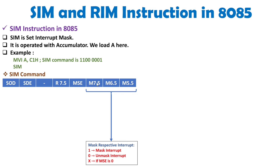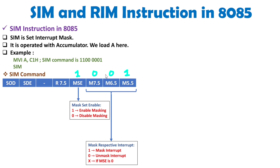The 3 bits M7.5, M6.5, and M5.5 are used to mask interrupts. If a bit is 1, we are masking that interrupt; if it is 0, we are not masking it. However, these bits are don't care if the MSE bit equals 0. So first, MSE must be set to 1 to enable masking. If MSE equals 0, we cannot do anything with these 3 bits. For example, if MSE is 1 and you write 001, it means we are masking RST 5.5 hardware interrupt. Values of 0 mean the interrupt is not masked, but MSE must be 1 to enable masking of these 3 bits.